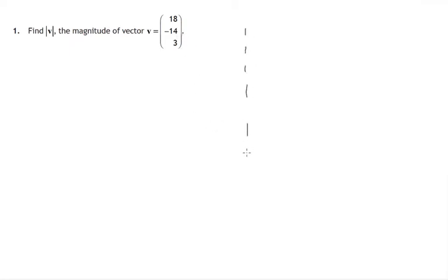So the formula for finding the magnitude of a vector with components, the magnitude is just these two straight lines down the side, that's what it means, is the square root of, and we'll take each of these components, square them and find the sum.